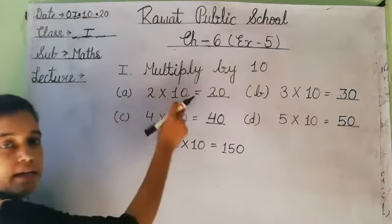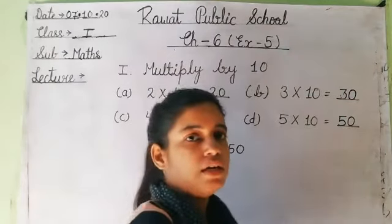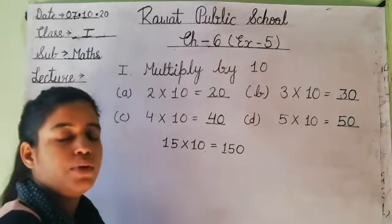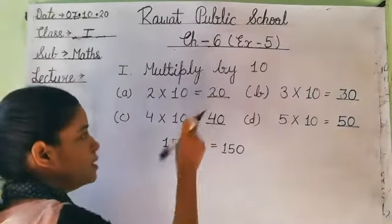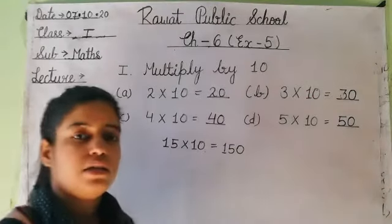Question number A: 2 multiply 10. Agar hum 2 ki table 10 times count kareenge, the answer we will get 20. 2 times are 20. Next question B: 3 multiply 10. 3 times are 30.